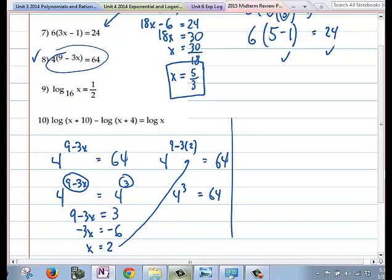Now we have on number 9 a log equation to solve. You have log base 16 of x equals 1/2. Now, when you have the type of equation where you have a log equals a number, the best way to solve this is to just switch it back to exponential form. In this case, you would write 16^(1/2) = x. And remember, half power is really square root, so your answer for this would be 4.